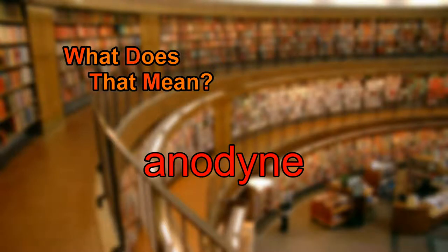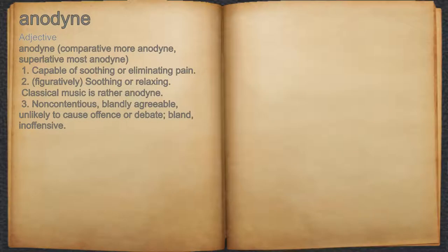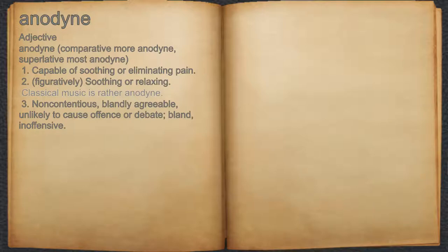What does anodine mean? Anodine. Adjective. 1. Capable of soothing or eliminating pain. 2. Figuratively, soothing or relaxing. For example, classical music is rather anodine.